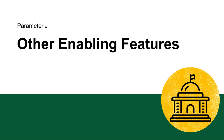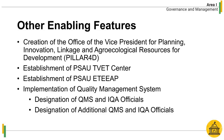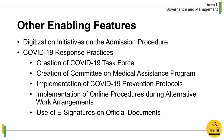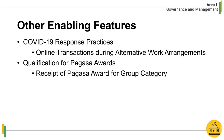Parameter J: Other Enabling Features. These include: creation of the Office of the Vice President for Planning, Innovation, Linkage, and Agro-Ecological Resources for Development; establishment of the PSAU-TBET Center; establishment of the PSAU-ETEA; implementation of a Quality Management System; compliance to ARTA-EODB-EGSD; implementation of 5S; digitization initiatives on the admission procedure; COVID-19 response practices for work arrangements; and qualification for Pag-Asa Awards.